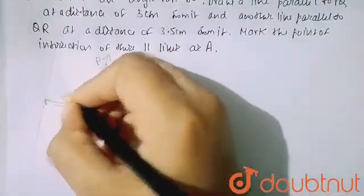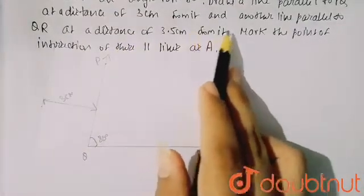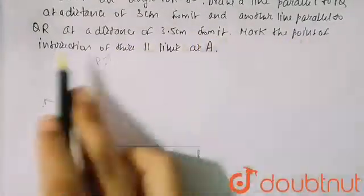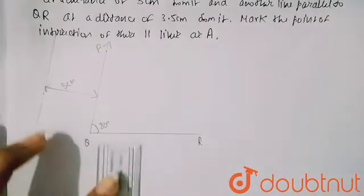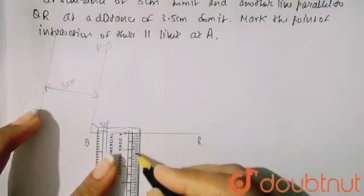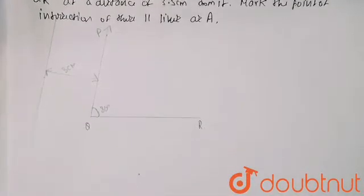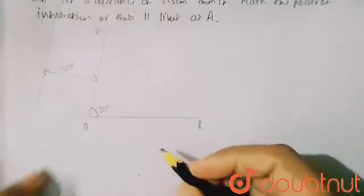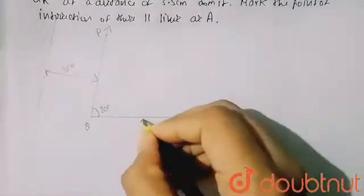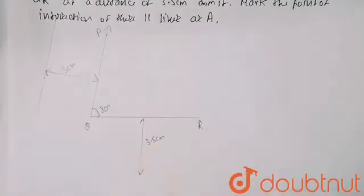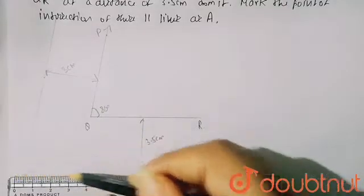Now, another line parallel to QR at a distance of 3.5 centimeters. So from QR, the distance is 3.5 centimeters — you can measure 3.5 centimeters straight. This is my distance of 3.5 centimeters, and I have to draw a line parallel to QR, so it will be passing like this.